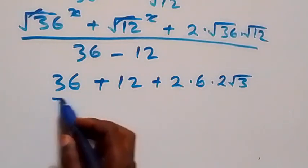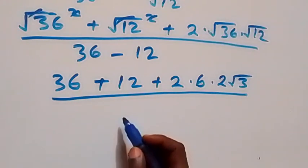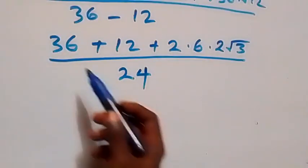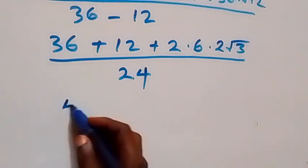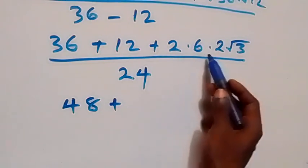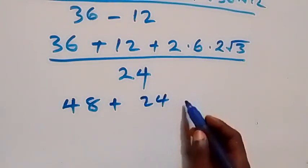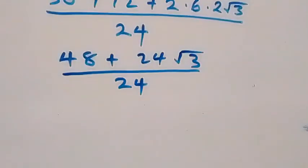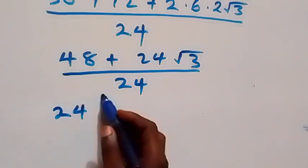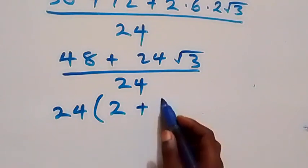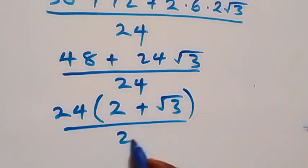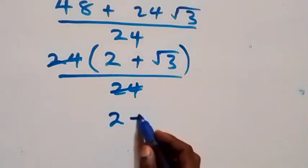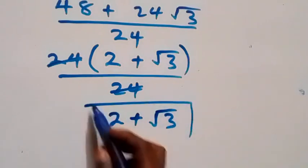The denominator is 24. The numerator gives 36 plus 12 equals 48, plus 2 times 6 times 2 root 3 equals 24 root 3. So we have (48 plus 24 root 3) over 24. Factoring 24 out gives 24(2 plus root 3) over 24, and 24 cancels, leaving 2 plus root 3 — the same answer as Method 1.